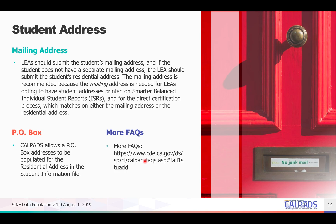In addition to student information, you would also be submitting student address. LEAs are advised to submit the student's mailing address when possible. The student's residential address can be submitted if a separate mailing address does not exist. PO box addresses are accepted by CALPADS, and there is an FAQ with more information related to the student mailing address — please visit that URL on the slide.